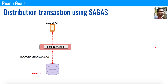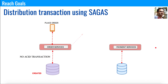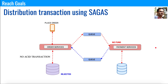Now, can we fulfill this order? No, because we have not received the payment. As we saw, the payment service is in a different database at a different location. So a message is sent from the order service to the payment service, which checks the user's credit card information. If payment is not available, a rejected message is sent back to the order service — the "created" state changes to "rejected" and the order is canceled, similar to a rollback.